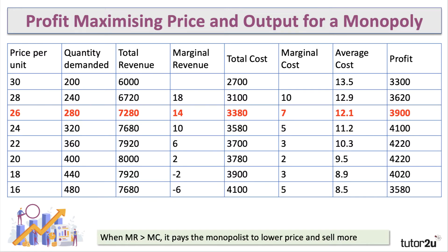Where in this data would a monopolist maximize profit? Let's choose an output which isn't a profit maximizing output. At output 280, at a price per unit of 26, marginal revenue is greater than marginal cost — the marginal revenue of selling the extra units is 14 while the marginal cost is 7. So it pays the monopolist to lower the price and sell more, because they're getting more per extra unit than it's costing them to supply. Cutting the price to 24, for example, marginal revenue is 10, marginal cost is 5, and profits go up from 3,900 to 4,100.